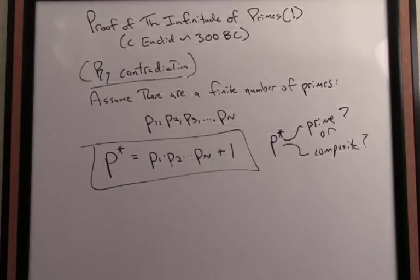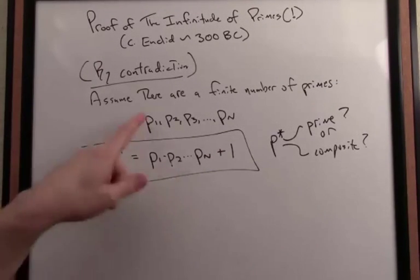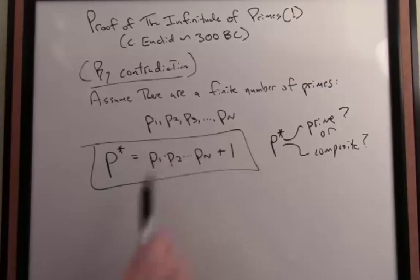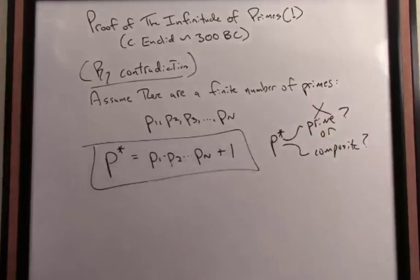And that list was the total list of primes. There's a finite number. So if P* were prime, it would be bigger than any prime on the known list. And that's a contradiction. It can't be prime because we listed all the primes here. So P*, therefore, cannot be prime.